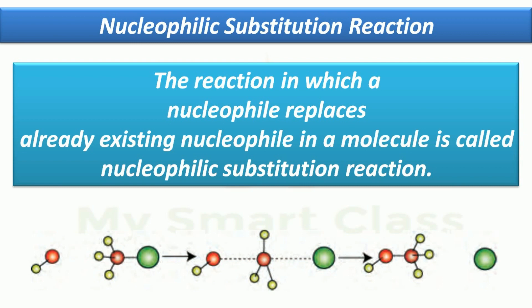Now let's understand the definition of nucleophilic substitution reaction. It is a reaction in which an incoming nucleophile replaces an already existing nucleophile in a molecule. As an example, we can see a molecule in which a nucleophile is already present, and the attacking nucleophile is going to replace it — this is a nucleophilic substitution reaction.